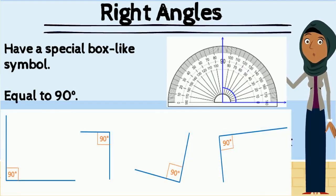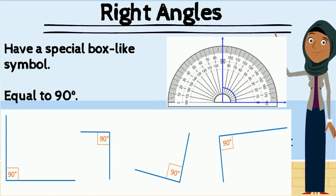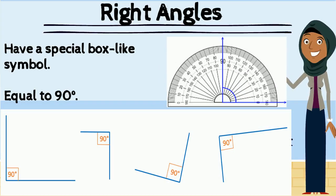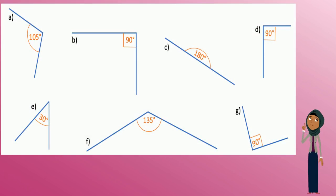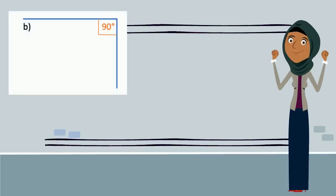The next type of angles are right angles. They have a special box-like symbol and are exactly equal to 90 degrees. Have a look at some examples of right angles here. Now pause the video again and see if you can find the right angles. When you have found them, you can continue watching to check your answers.